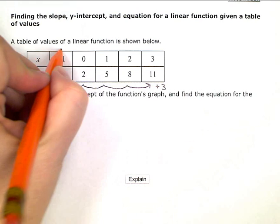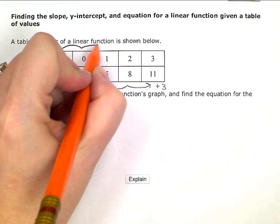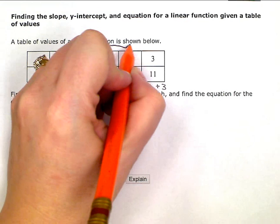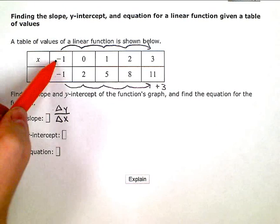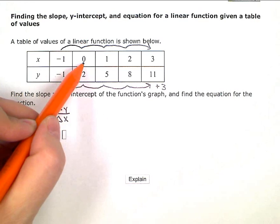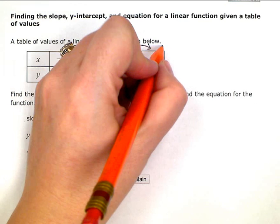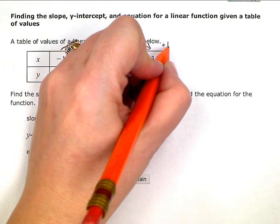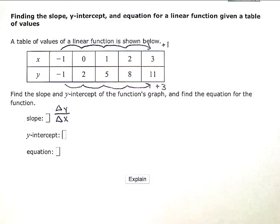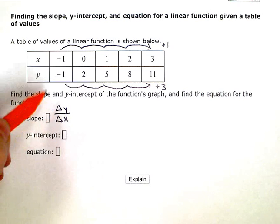Now let's see what's happening with the x's. So negative 1 to 0 is plus 1, and then we plus 1, plus 1 again, and plus 1 again to get to 3. So the x row is adding 1, or its change is plus 1.